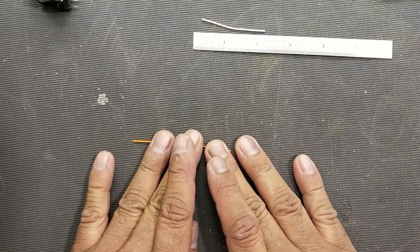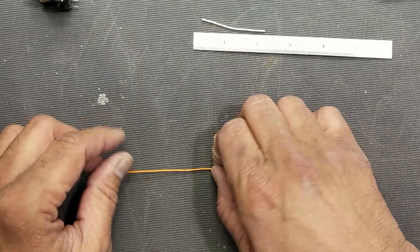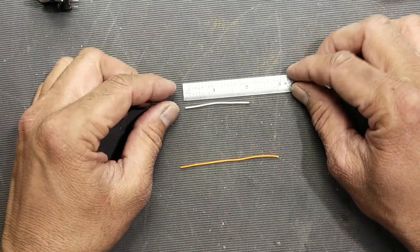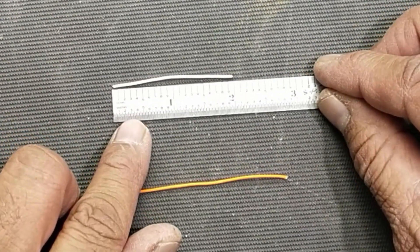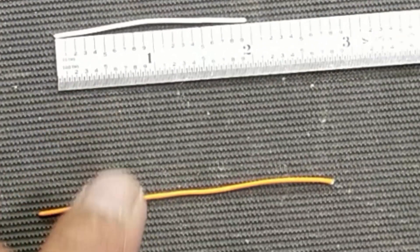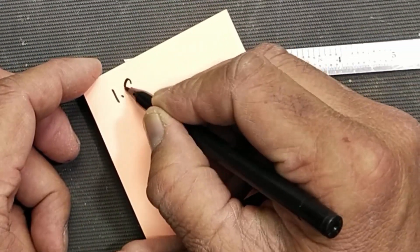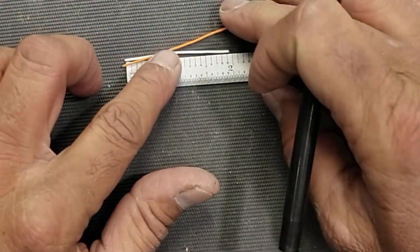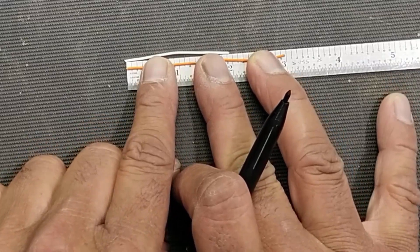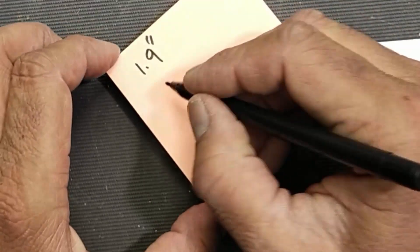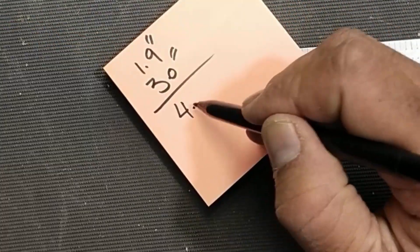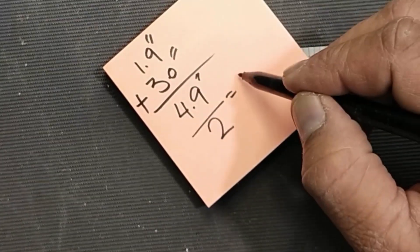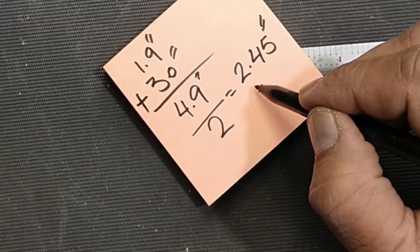If you cannot find the core and coil former data sheet, in this way we can determine the MLT. Now make measurements for both. This one is approximately 1.9 inches, the inner length, and this one is we can say 3 inches, 4.9 inches. Add them and divide the answer by 2. So it is 2.45 inches MLT mean length turn.